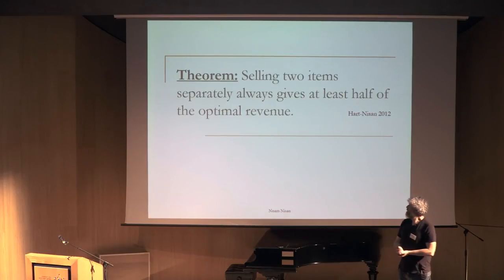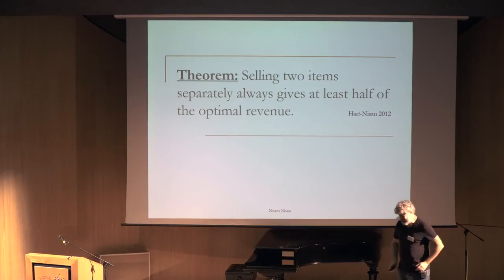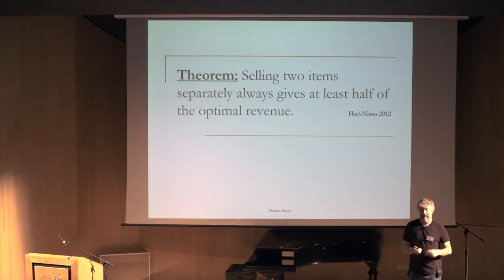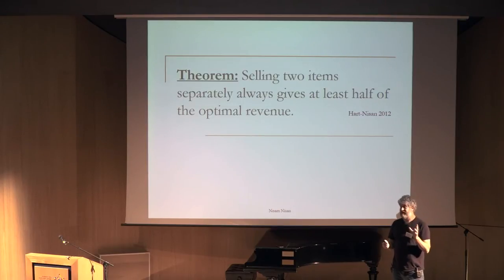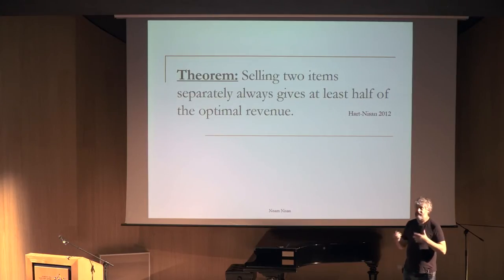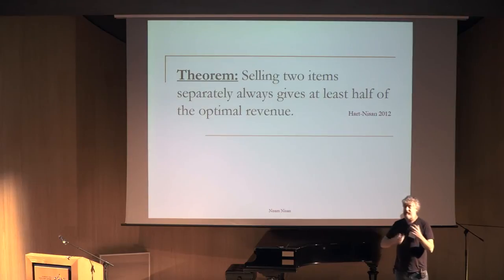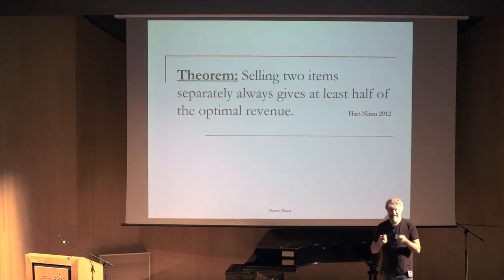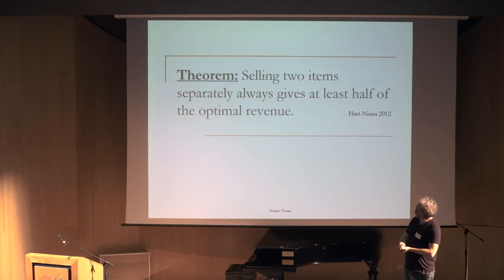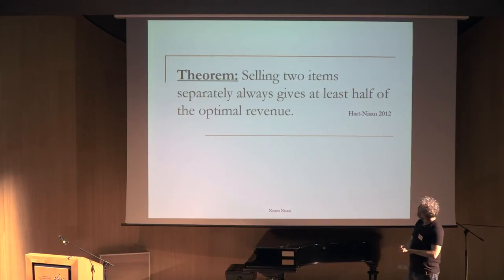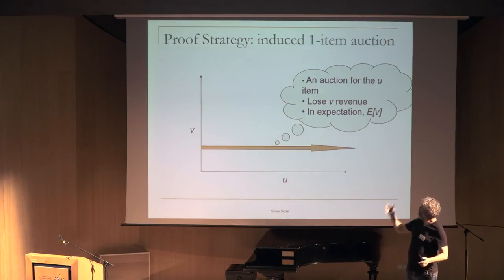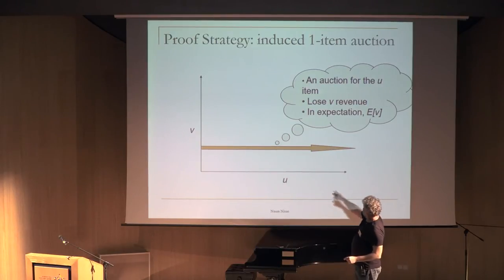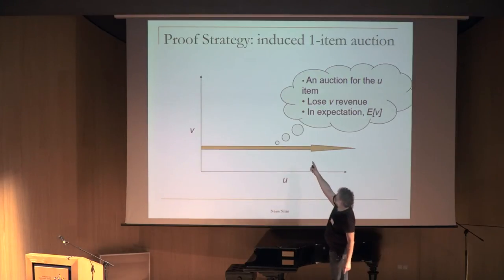Part one is joint work with Sergio Hart. It says: if you insist on selling each item separately at the best price for each one separately, you make at least half the revenue of the optimal auction. I want to give the idea of the proof: I need to show that selling two items separately gets at least half the revenue. I'll look at the optimal two-item auction as a grid with values v and u.